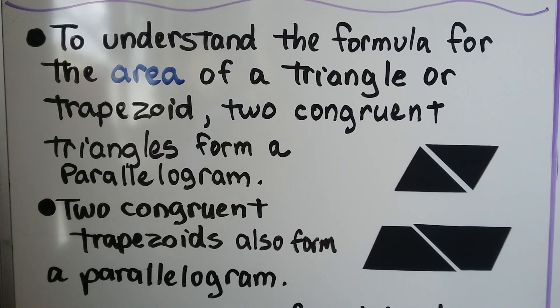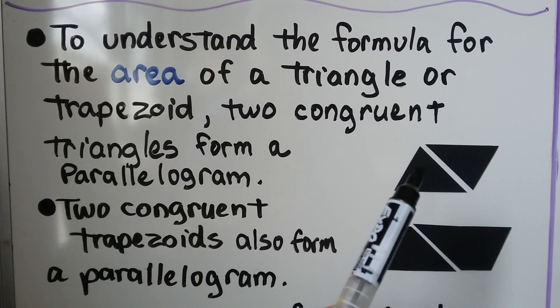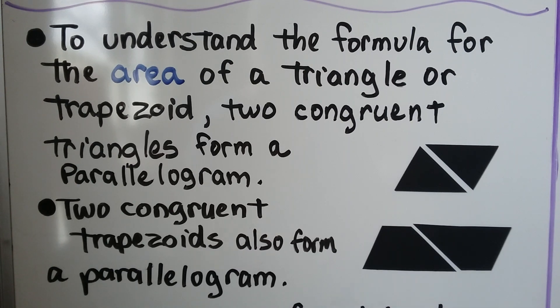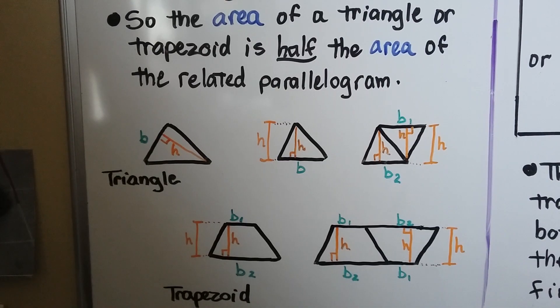To understand the formula for the area of a triangle or trapezoid, two congruent triangles form a parallelogram, and two congruent trapezoids also form a parallelogram. So the area of a triangle or trapezoid is half the area of the related parallelogram.